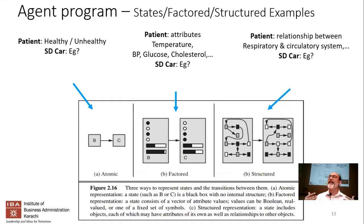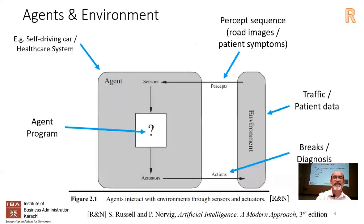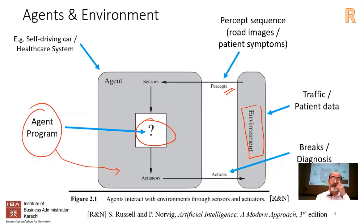Now let's look at the agent itself. Going back to the structure of an agent: here's the agent program — essentially your AI program — which receives percepts from the environment. The agent program is the real brains; it has to decide what actions to take. For example, in chess, if the computer is playing against a person, it must decide what moves to make.